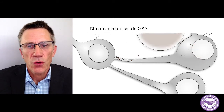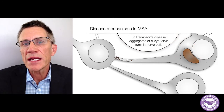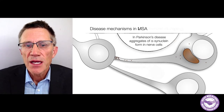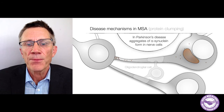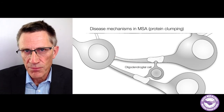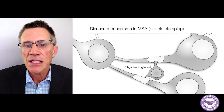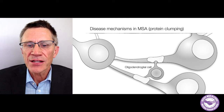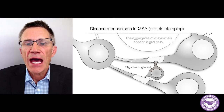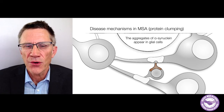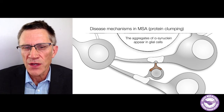In Parkinson's disease, these clumps — called Lewy bodies — form inside nerve cells. In MSA, the protein clumping actually takes place mostly in another cell type, the supporting cell called oligodendroglia. These oligodendroglia cells have synuclein aggregates, and we don't really understand how they form them or why.